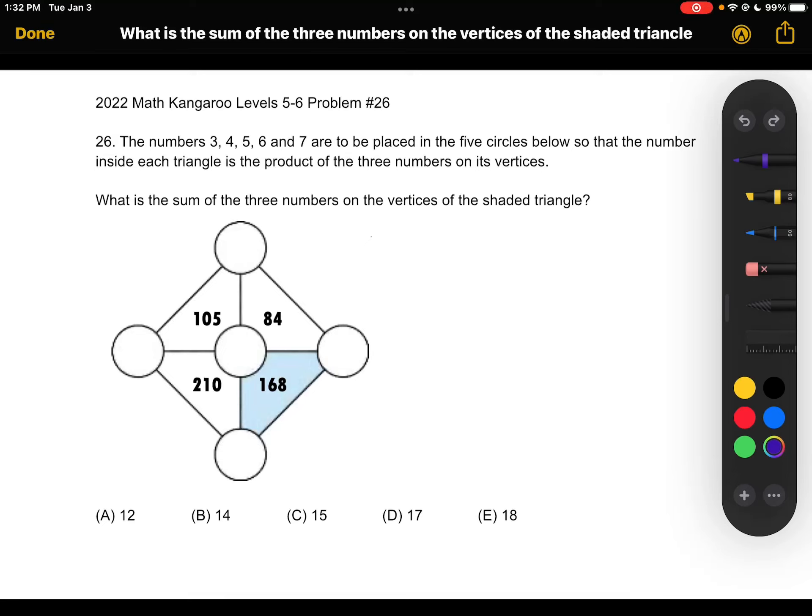This is the 2022 Math Kangaroo in Levels 5-6, problem number 26. The numbers 3, 4, 5, 6, and 7 are to be placed in the five circles below, so that the number inside each triangle is the product of the three numbers on its vertices.